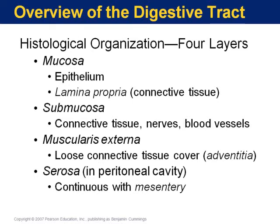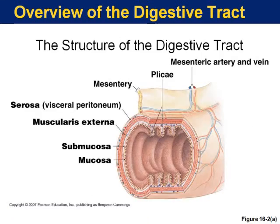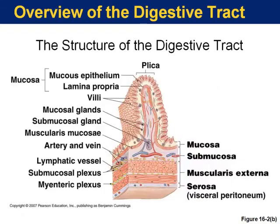We've already studied the histology parts, so we're going to move on to some of the other concepts of the digestive system. Here are the plique along with the villi. The villi are the little projections. The plique are more of the wave-like structures within the system.